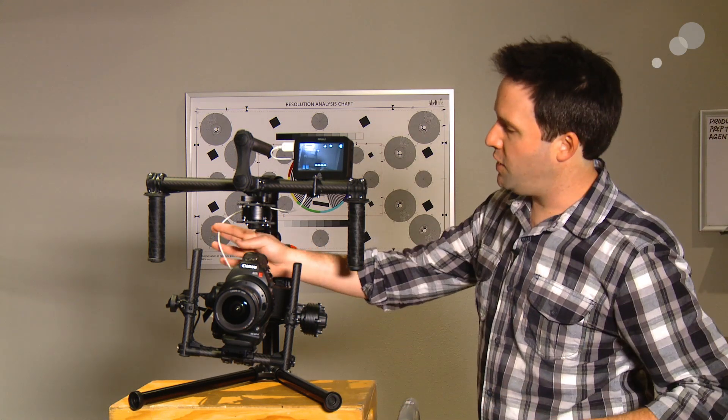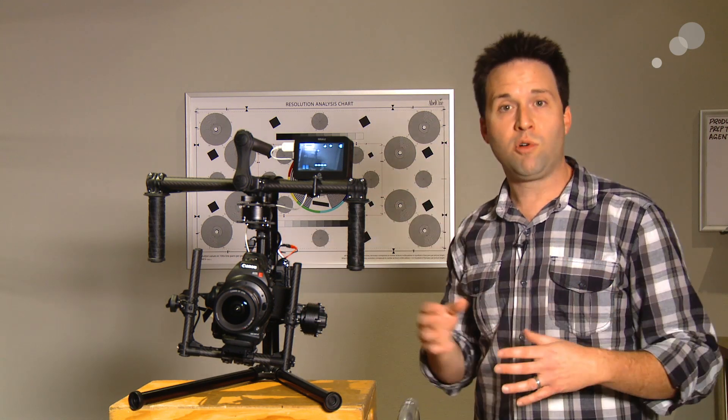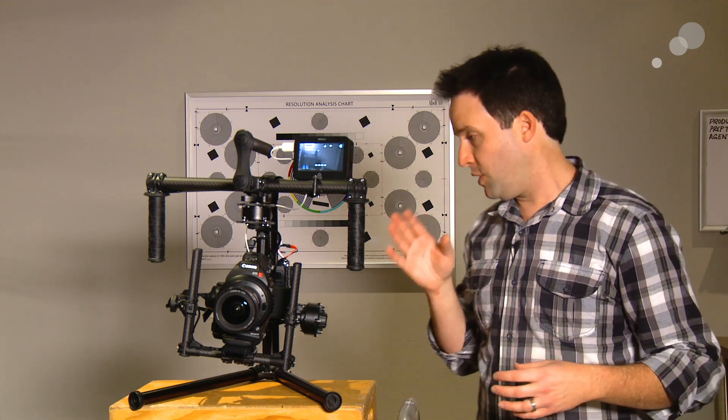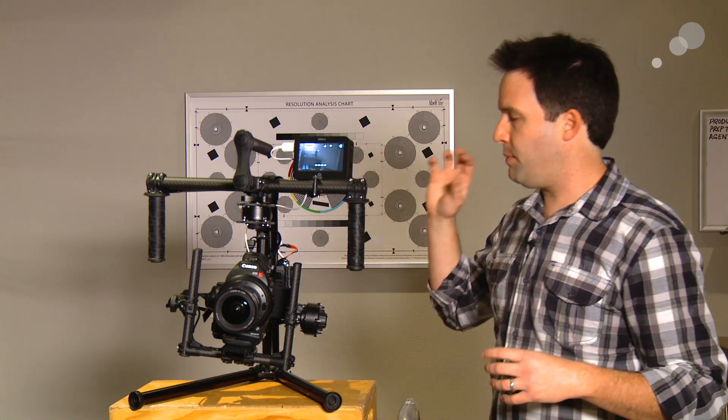Here I also have an HDMI cable coming out of the rig into my Atomos Ninja 2 recorder for ProRes recording, a great option for the C100 in any situation.